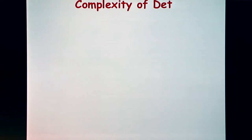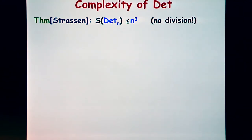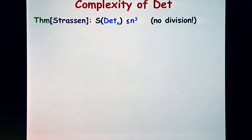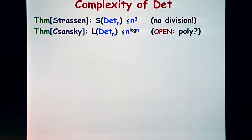We want to understand which polynomials have small circuits or formulas. The determinant has an efficient computation: a circuit of size n-cubed for the n by n determinant. Gaussian elimination takes n-cubed operations but involves division, which doesn't appear in our circuit model. Even without divisions you can do it in the same amount — so it's efficient. For formula size, the best we know is a slightly quasi-polynomial n-to-the-log-n size formula.